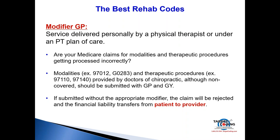With some rehab codes you may need to use the GP modifier — it's a Medicare modifier indicating the service was performed by a physical therapist. You might think: 'I'm a chiropractor, I don't want to use this.' However, if your therapy claims are being denied, it's probably because the health plan requires the GP modifier even though you're not a physical therapist.